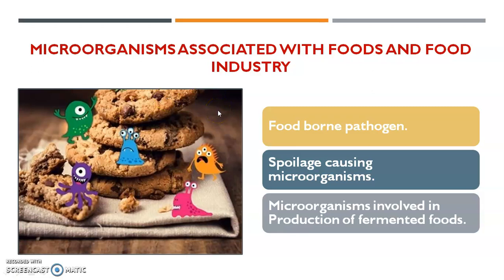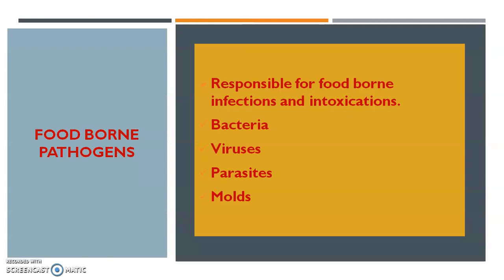Next: microorganisms associated with foods and the food industry. These include foodborne pathogens, spoilage-causing microorganisms, and microorganisms involved in production of fermented foods. The first category is foodborne pathogens, which are responsible for foodborne infections and intoxications. These include bacteria, viruses, parasites, and molds.